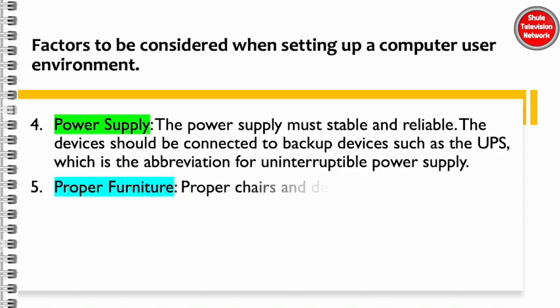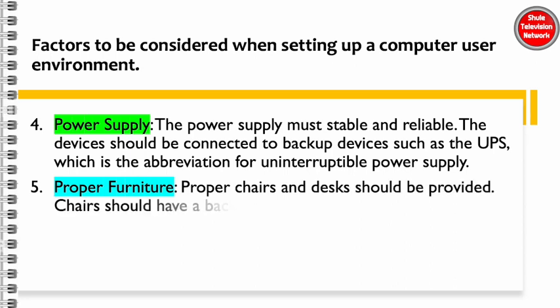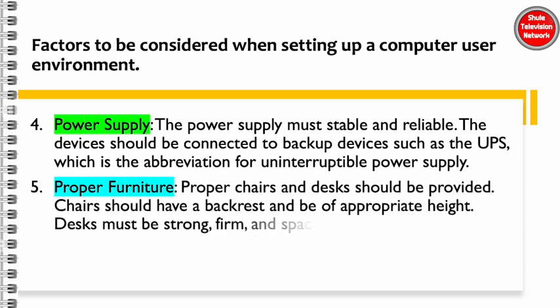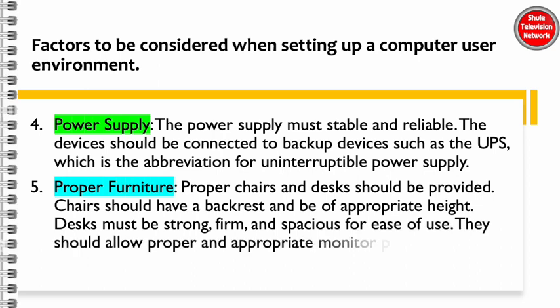The fifth factor is the provision of proper furniture. Proper chairs and desks should be provided. Chairs should have a backrest and be of appropriate height. Desks must be strong, firm, and spacious for ease of use. They should allow proper and appropriate monitor positioning of the computing devices.